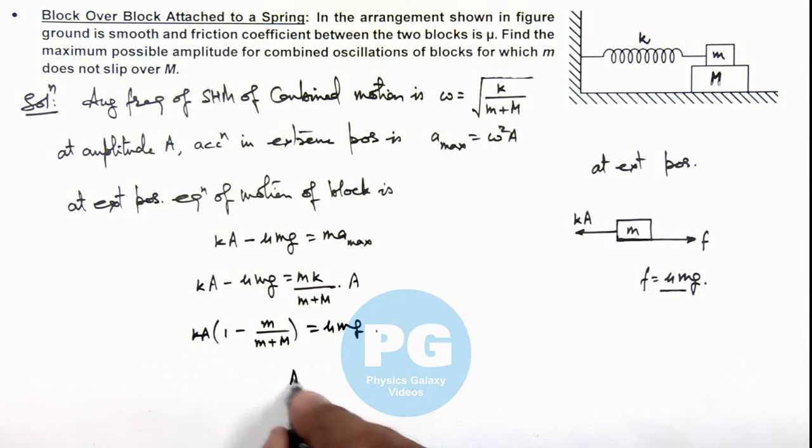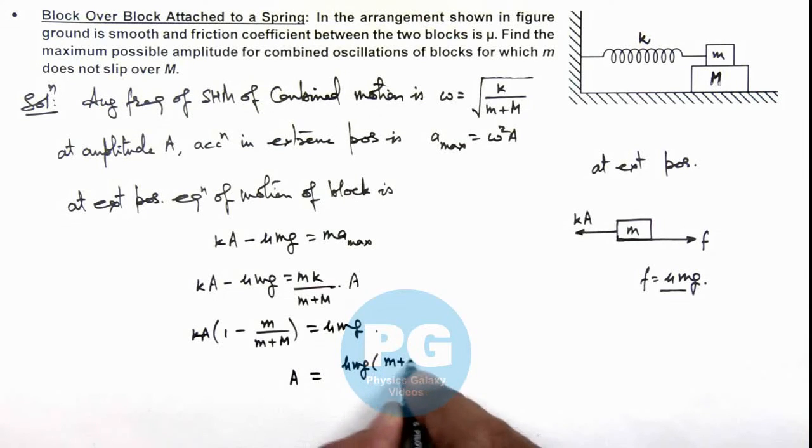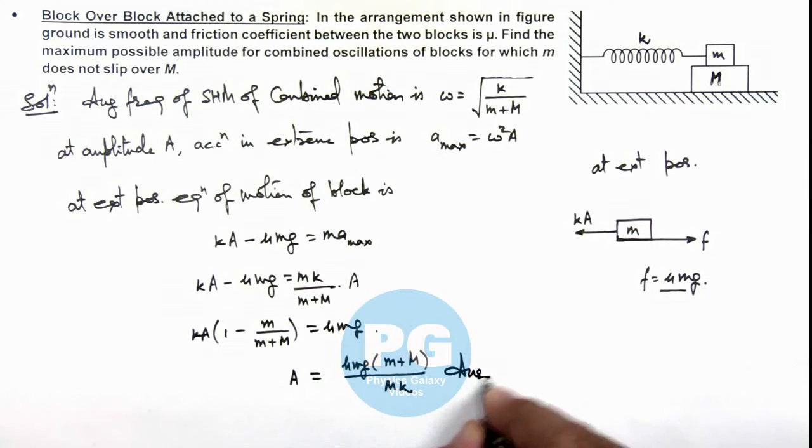This gives us the value of A as mu m g multiplied by m plus capital M divided by capital M times k. That is the final result of this problem, the maximum amplitude of oscillation for which small m does not slip or is at the verge of slipping at its limiting value.